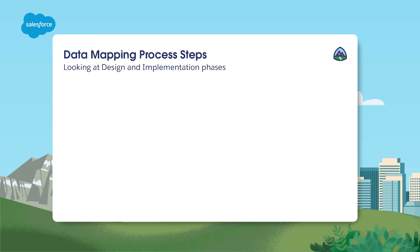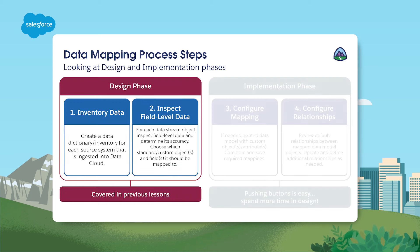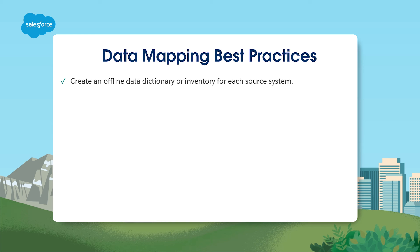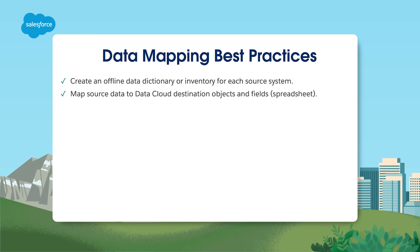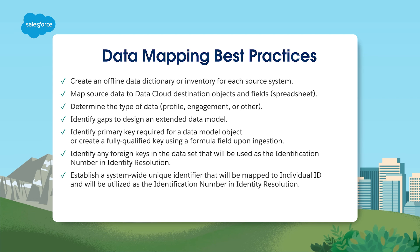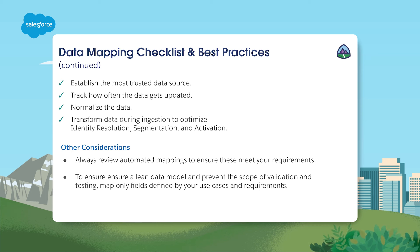Now let's turn to the data mapping process. There are two main phases. In the design phase, you want to inventory and then inspect field-level data. Then, in the implementation phase, you'll configure mappings and relationships. Before mapping in Data Cloud, there are best practices to follow to ensure your success: review all potential data sources relevant to your use cases, analyze how data is mapped today and plan its transition to Data Cloud, evaluate if the standard model meets your needs or if there are gaps necessitating an extended data model, ascertain a primary key or devise a formula-driven key, identify any foreign keys within the data set, and establish a system-wide unique identifier that will be mapped to the individual ID and used as the identification number in identity resolution. When data mapping, always review automated mappings to ensure they meet your requirements, to support a lean data model, and to limit the scope of validation and testing. You really only want to map fields defined by your use cases and requirements.